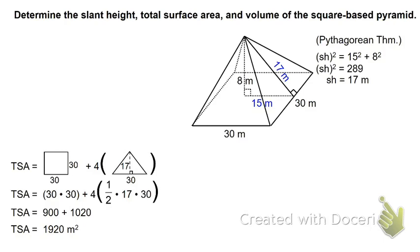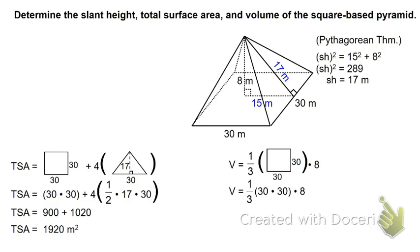The volume is going to be one-third base area times height. So it's one-third, the square's area, times the height — which is 8, the actual height of the pyramid. The 17, which is the slanted height, is used for TSA. So setting it up: one-third of 30 times 30 times 8. 30 times 30 is 900, times 8, then divide by 3 gives 2400. Because it's volume, that's a three-dimensional measurement, so it's meters cubed.